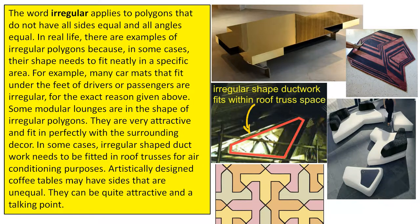In real life there are examples of irregular polygons because, in some cases, their shape needs to fit neatly in a specific area. For example, many car mats that fit under the feet of drivers or passengers are irregular for the exact reason given above.